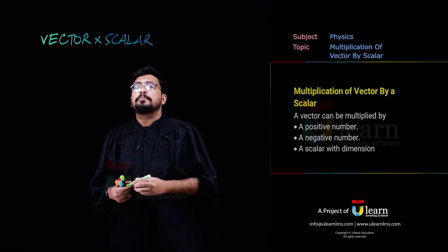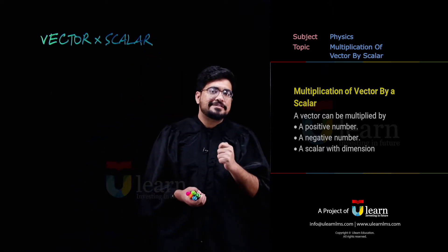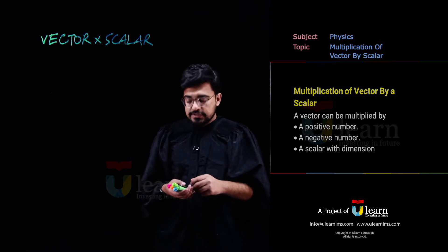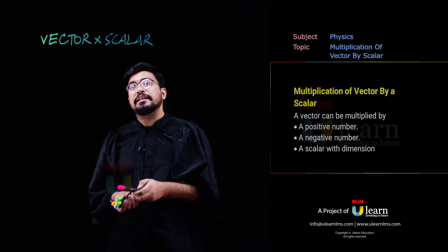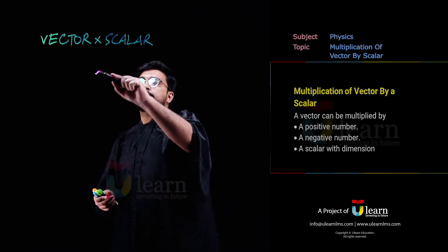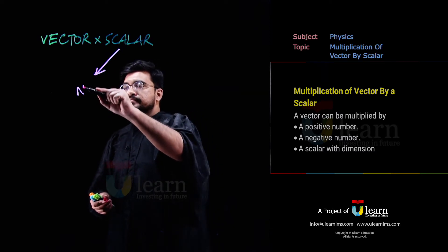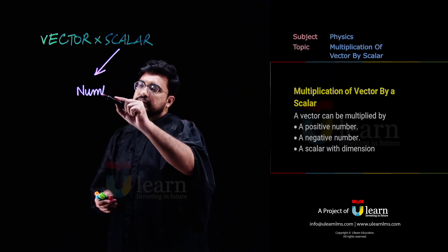Sabse pehle yahaan peh pata hoona chahiye ki hum kis tarah ka scalar ke saath isko multiply kareenge. Scalar asal meh do tarah ki hoote hai. There are numerical scalars, jinhe aap numbers bhi kehte ho.